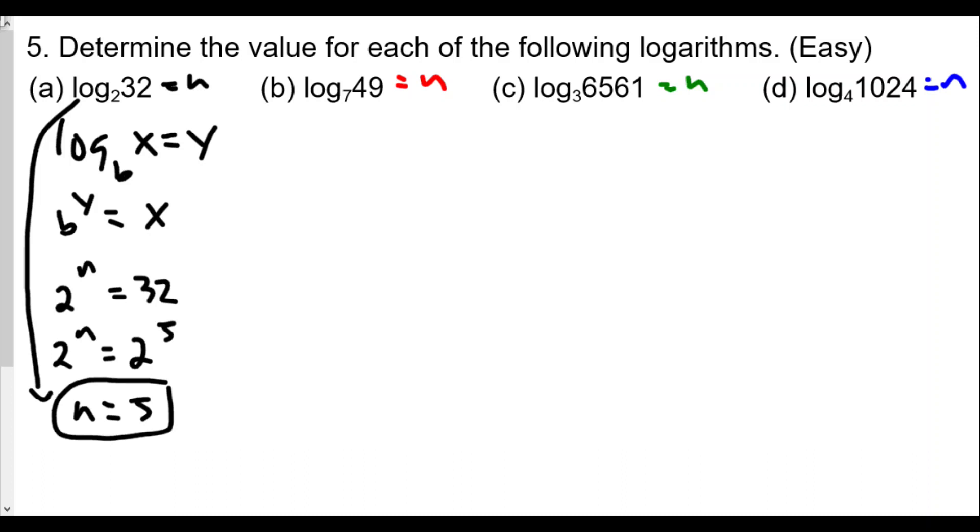Repeat this for each of these here. 7 to the n equals 49. 7 to the n equals 7 squared. n is equal to 2. Again, we're rewriting our log function into an exponential function, so for b, log base 7 of 49 equals 2.